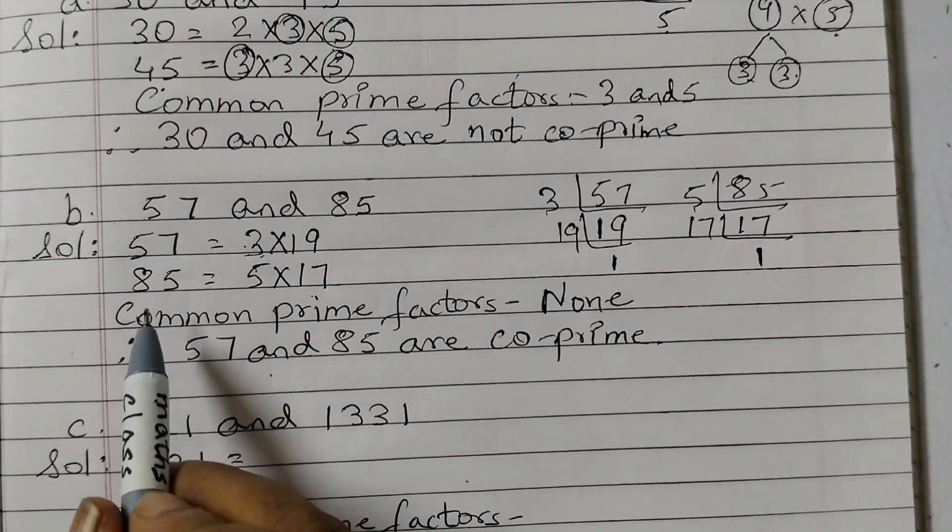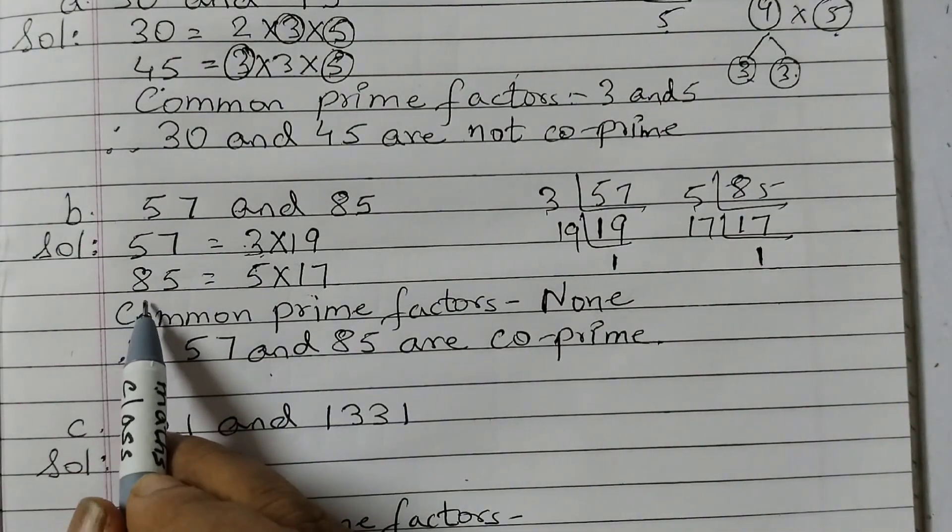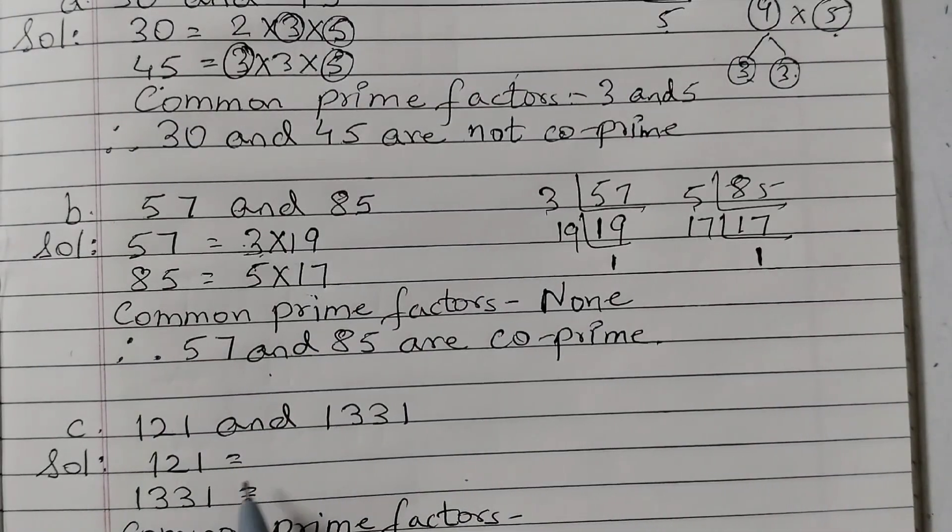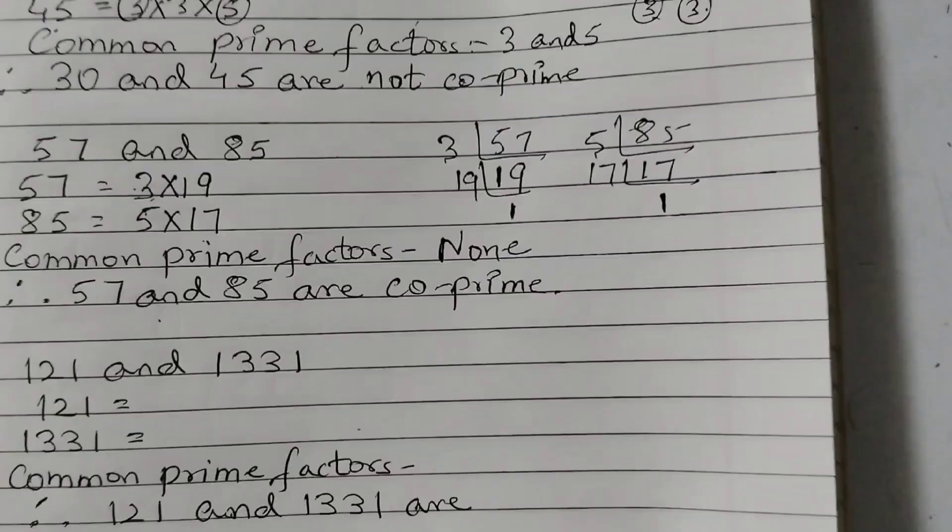The only common factor we can have is 1. Like 1 is a factor of 57 as well as 85. 1 is a common factor of all the numbers. Now, 121 and 1331. We will find the prime factorization.